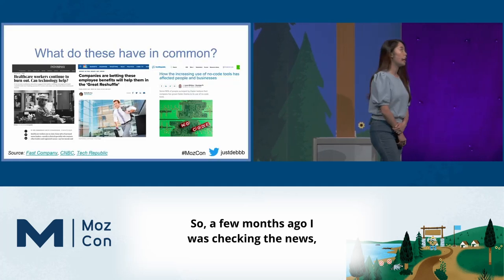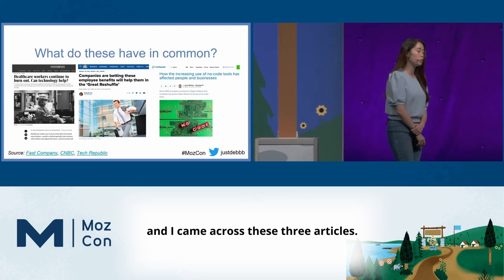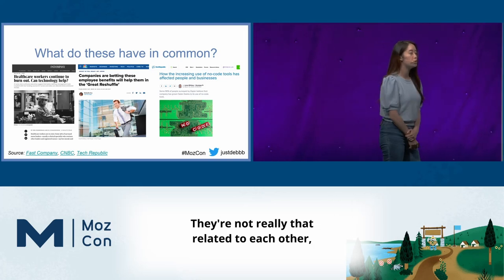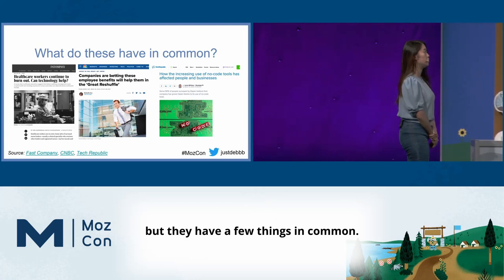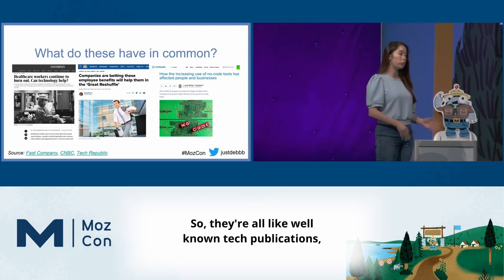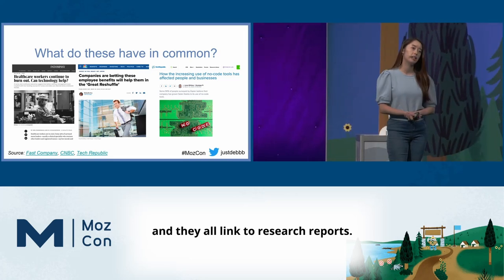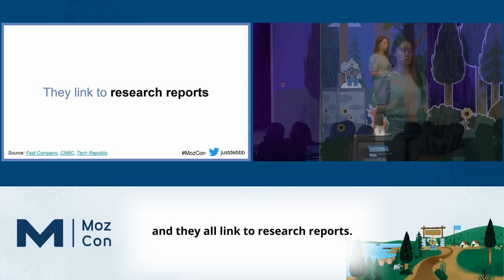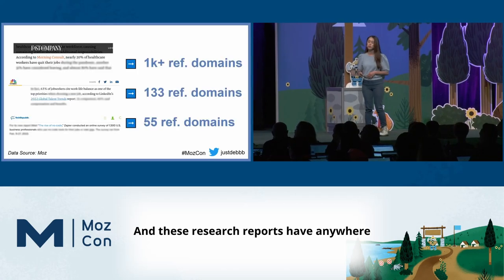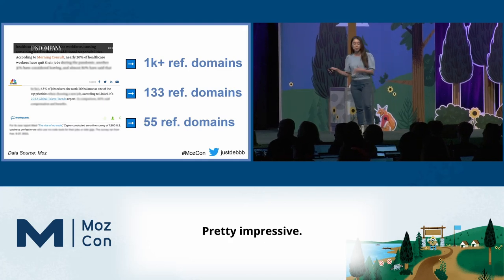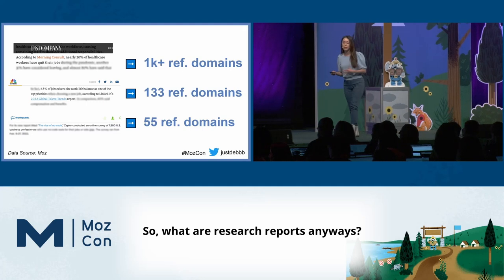So a few months ago, I was checking the news and I came across these three articles. They're not really that related to each other, but they have a few things in common. They're all well-known tech publications. They all are high DA sites, and they all link to research reports. And these research reports have anywhere from 50 to 1,000 referring domains. Pretty impressive.